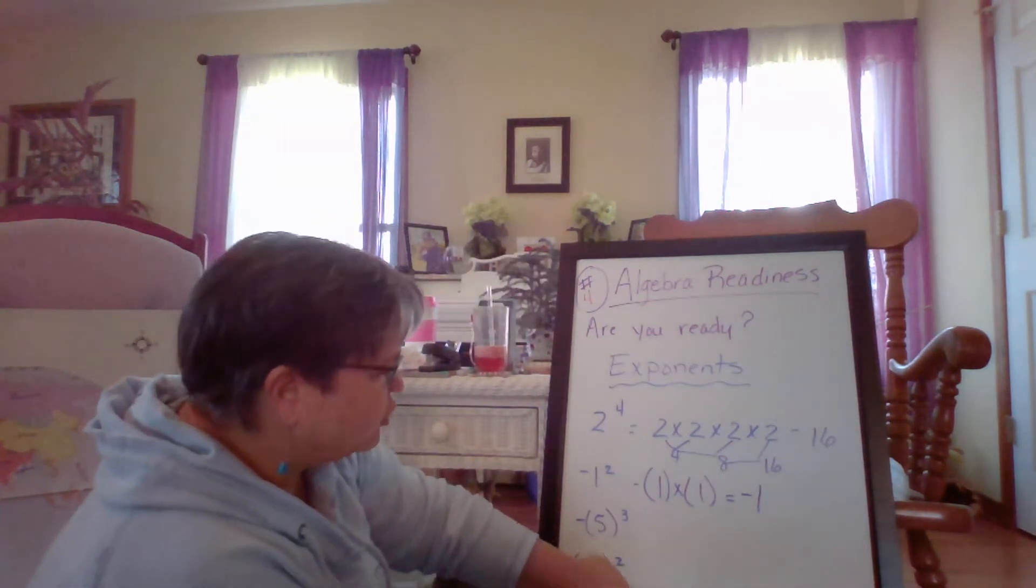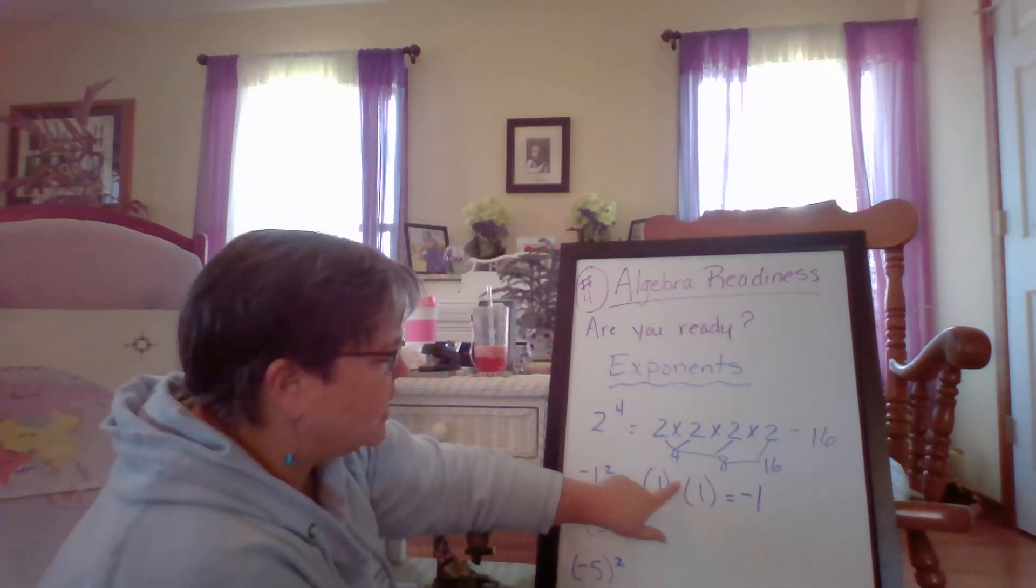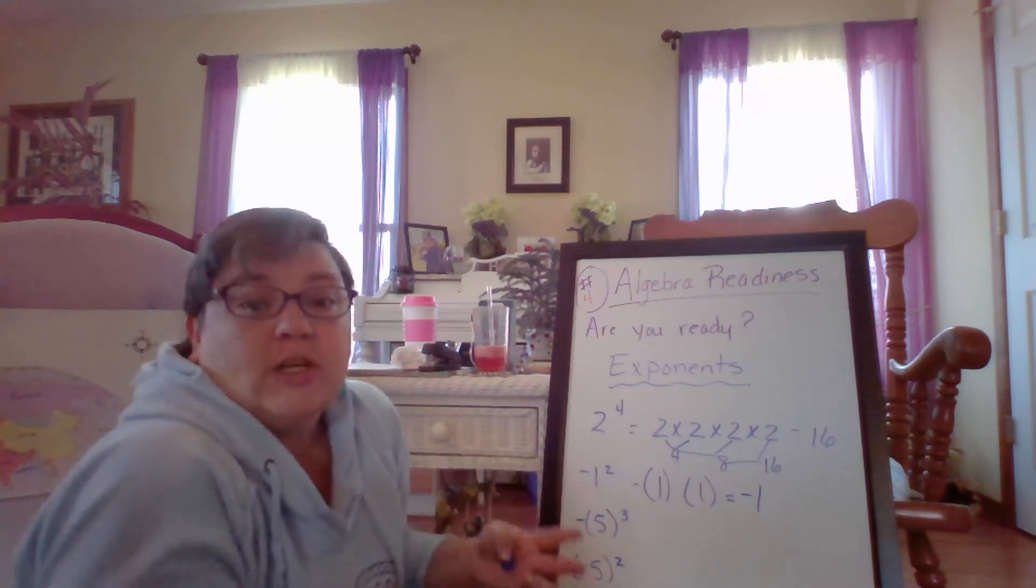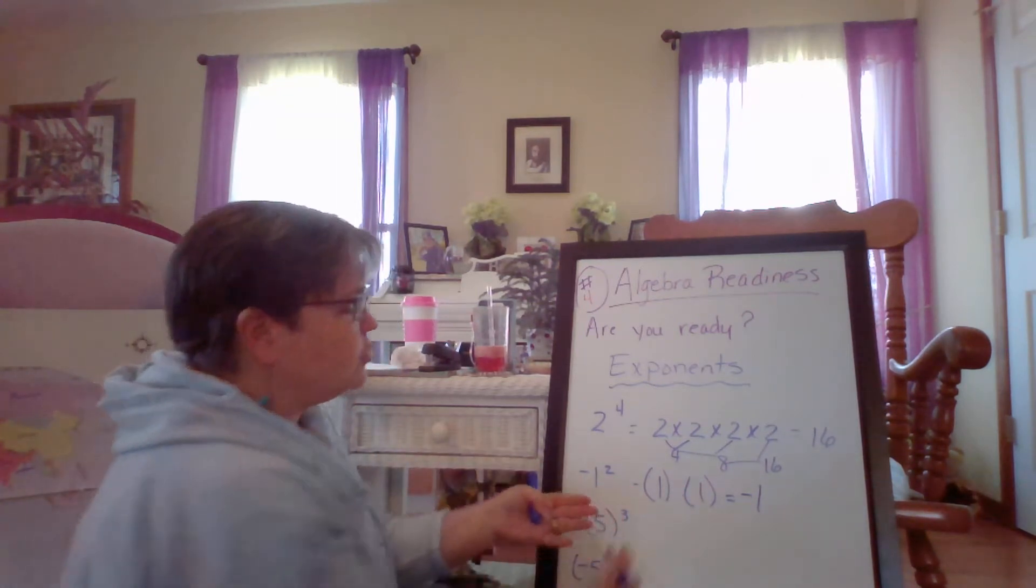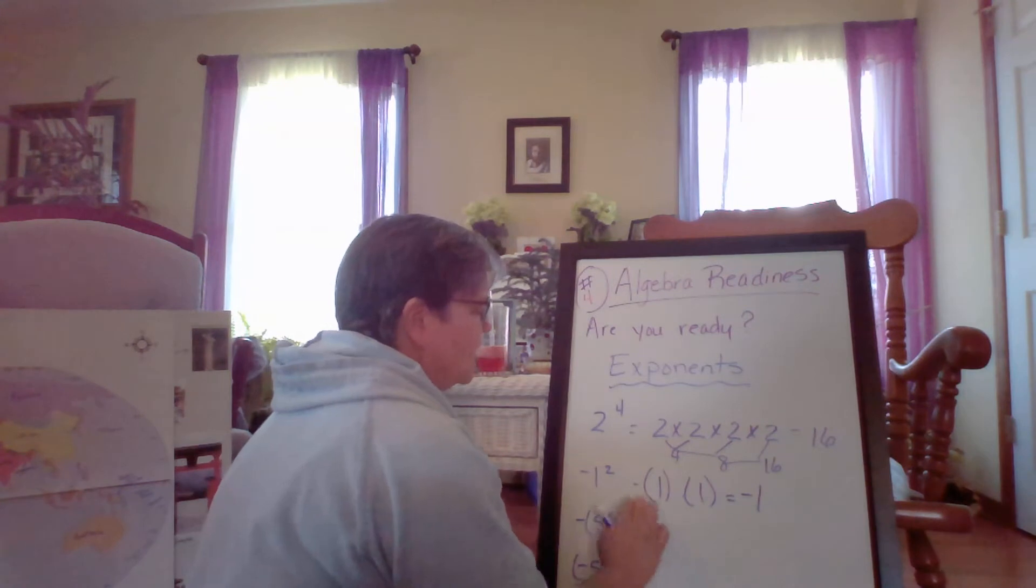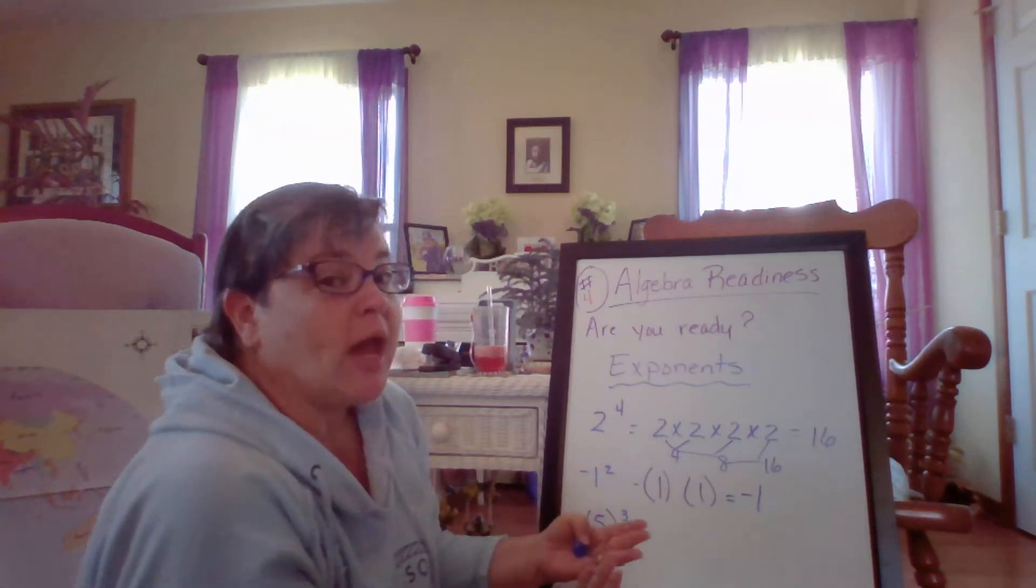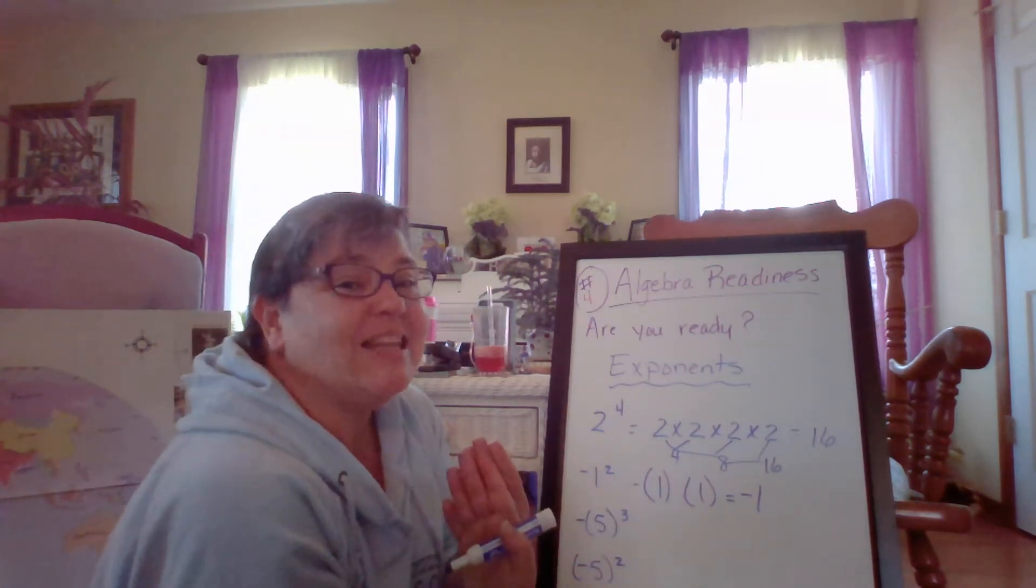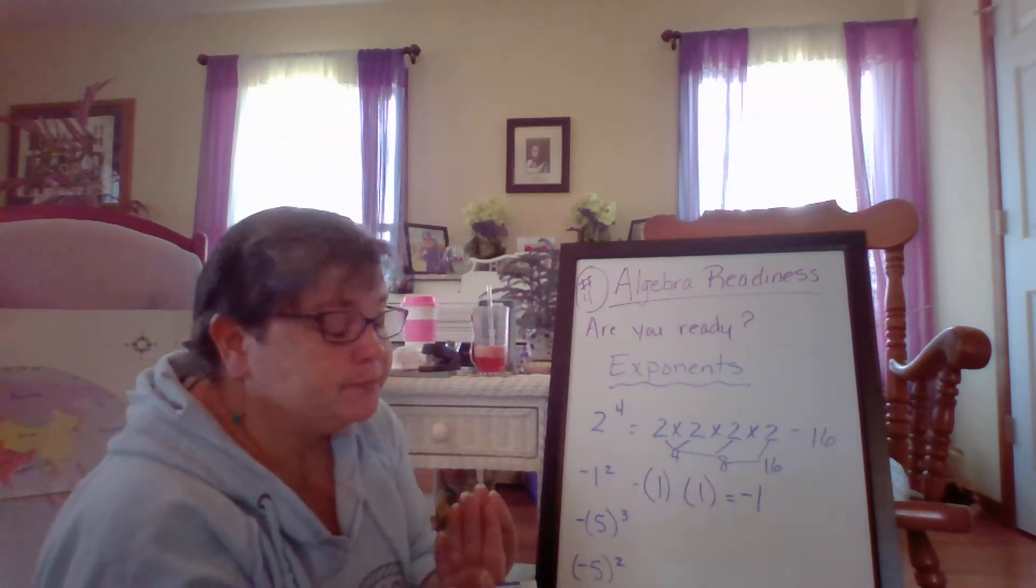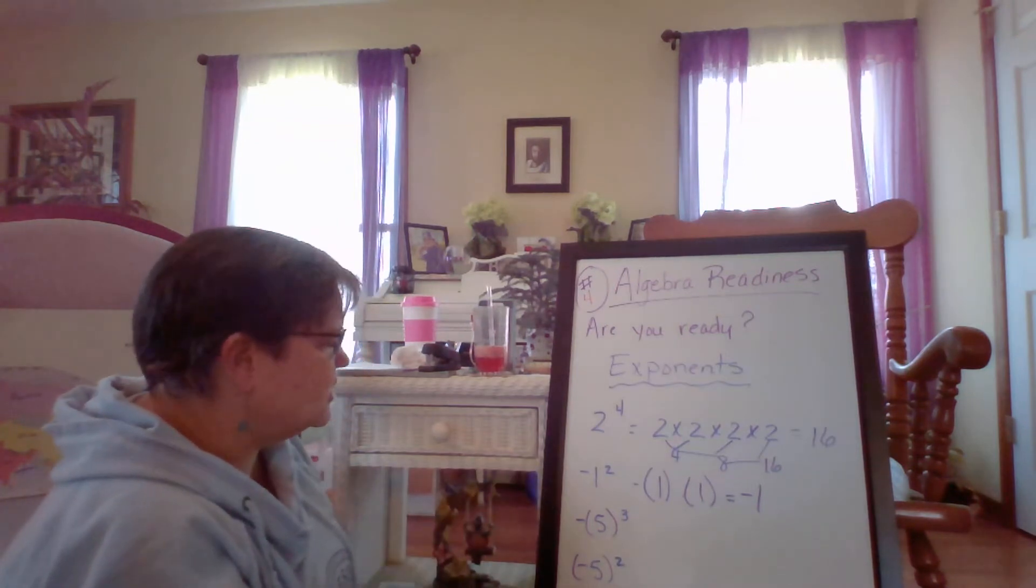I will tell you in algebra, they're not going to have this multiplication sign because x is usually a variable. So they're just going to put those parentheses together. So it looks like parentheses one, parentheses one. So I'm telling you now that when you see parentheses side by side, they want you to multiply them.